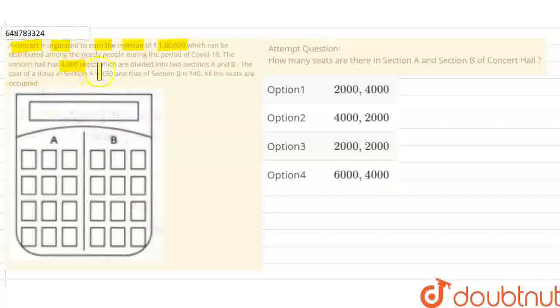The cost of a ticket in section A is 50 rupees. Section B's cost is 40 rupees. All the seats are occupied. How many seats are there in section A and section B of the concert hall? Total seats are 4000 and the total revenue generated is 180,000.